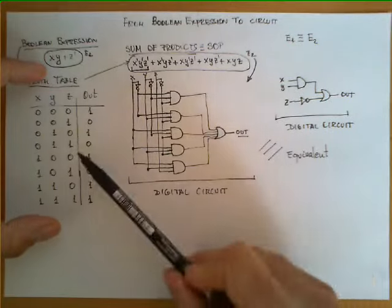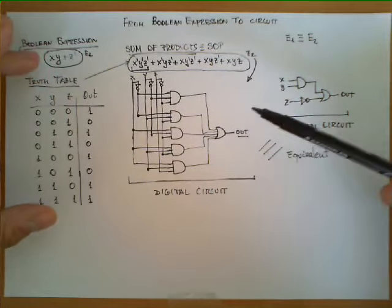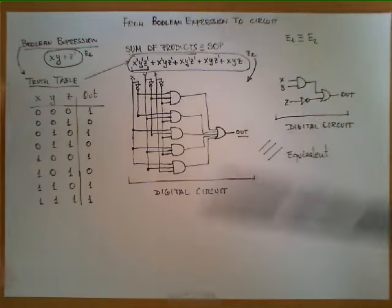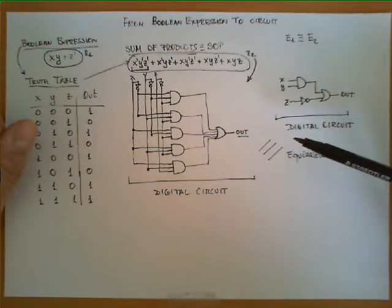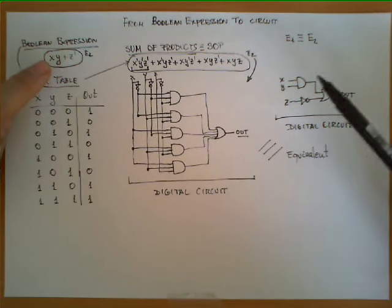If you resort only to the truth table, using the sum of products is one possibility to come up with a circuit. However, certain functions, if you manipulate the results accordingly and you apply simplification rules, some of the functions can be represented in Boolean expressions that are much more compact.